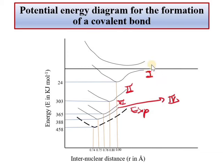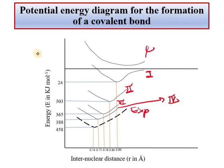जब भी कोई covalent bond का formation होगा, तो situation 1 हो सकती है जहाँ electron अपने ही atom के पास हों; situation 2 — electrons can be exchanged; situation 3 — screening effect between electrons of two atoms; situation 4 — ionic character, जहाँ दोनों electrons एक atom के पास transfer हो जाते हैं। Psi star का मतलब no bond formation — जैसे जैसे atoms नजदीक आएं, energy बढ़ती ही चलेगी, minus में नहीं आएगी।